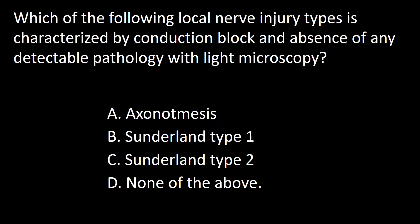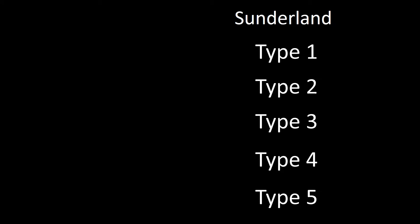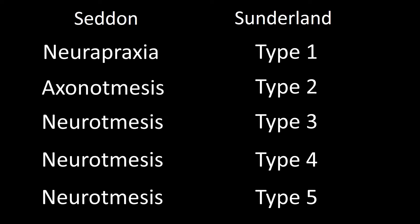Next question: which of the following local nerve injury types is characterized by conduction block and absence of any detectable pathology with light microscopy? A: Axonotmesis, B: Sunderland type 1, C: Sunderland type 2, D: None of the above. Sunderland classification breaks focal nerve injury into five types. Neuropraxia correlates with Sunderland type 1, axonotmesis with type 2, and neurotmesis with types 3, 4, and 5.